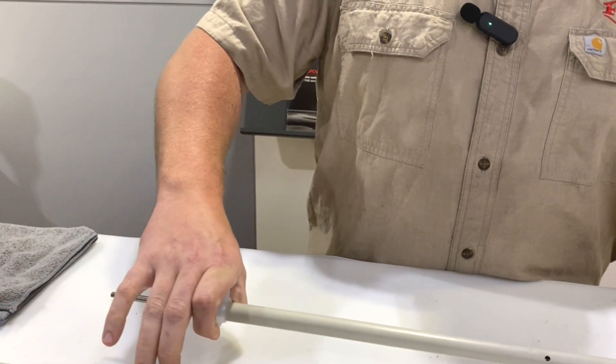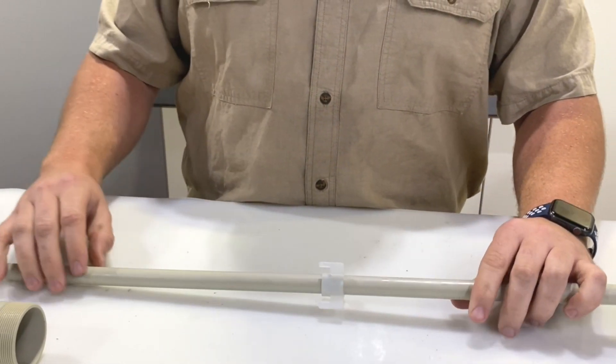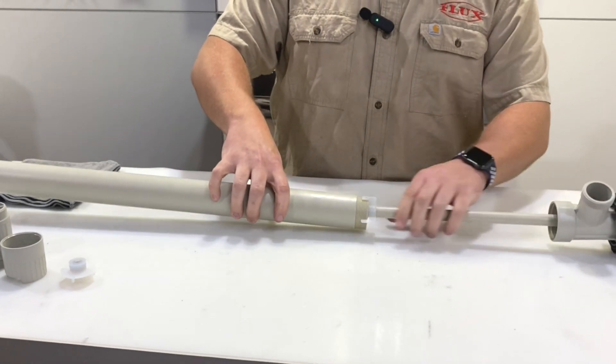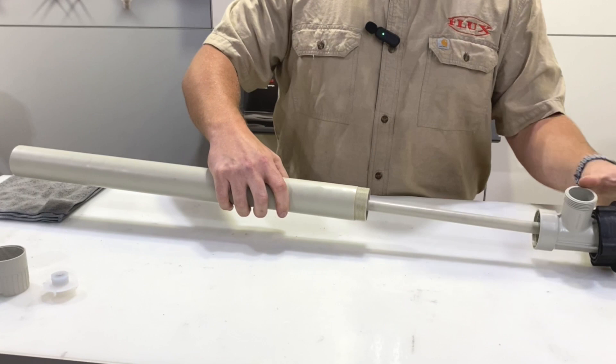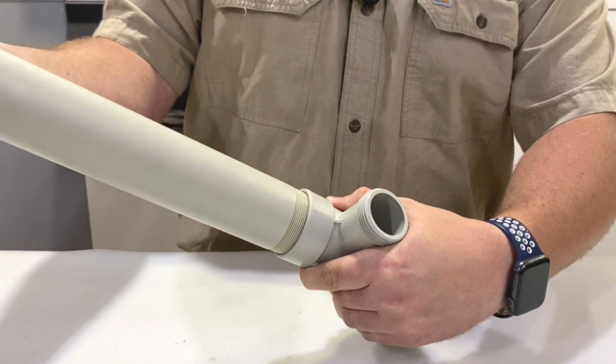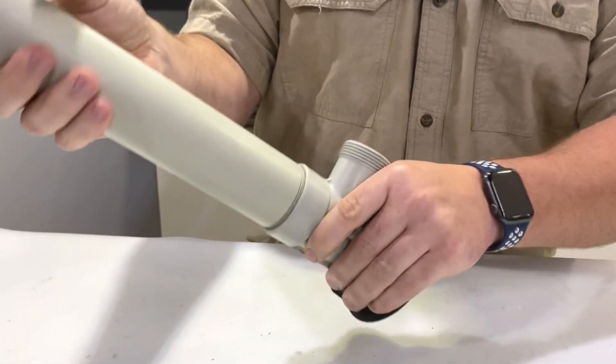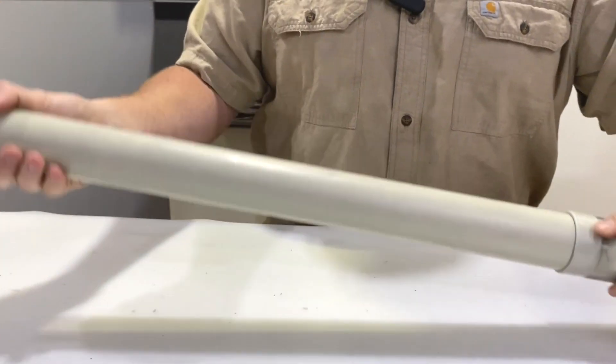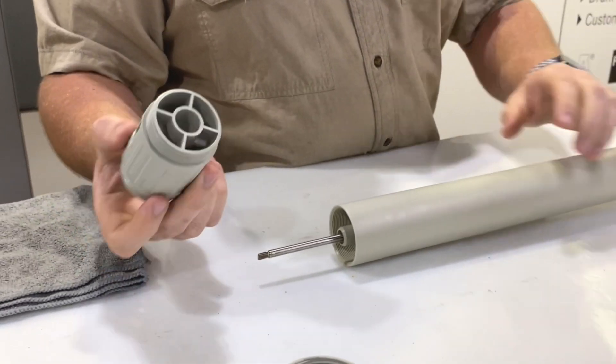And the outer tube slides over, and then screw the pump tube into the T piece. Get it good and tight.